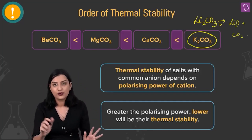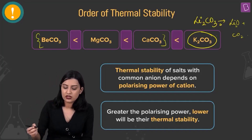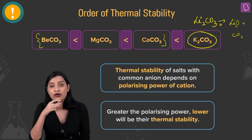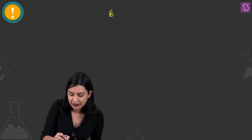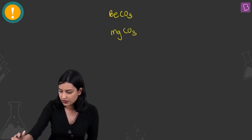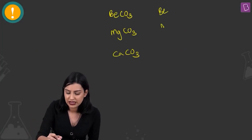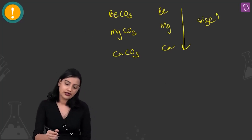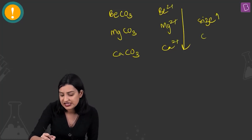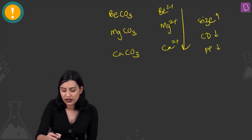Among the Group 2 carbonates — beryllium, magnesium, and calcium — thermal stability of salts with a common anion depends on the polarizing power of the cation. As you go down the group from beryllium to calcium, size increases while charge stays at 2+, so charge density decreases. This means polarizing power decreases going down: Be²⁺ > Mg²⁺ > Ca²⁺.